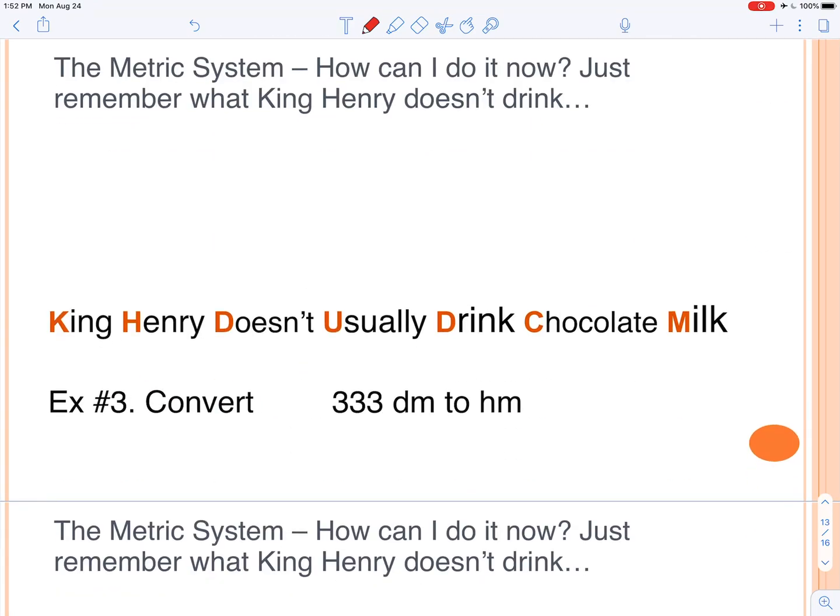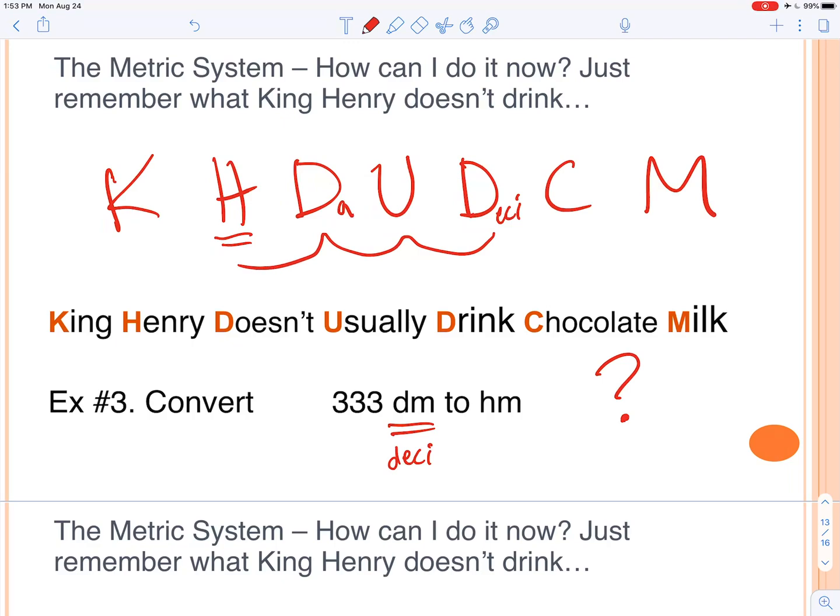All right, now that we've done a few together, how about you try doing this one? Just remember King Henry doesn't usually drink chocolate milk, and that should help you figure out how many spots to move this. Keep in mind DM, this is going to be DA. So this one is deci. So this one we're looking at decimeters, and we're trying to move it to hectometers. So go ahead and try to do this conversion. One, two, three spots to the left. So 0.333 hectometers is our final answer.